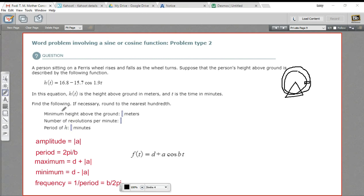In this case, we're being asked to find the minimum height of this person above the ground. So we're being asked to find the minimum value of this function. We're also being asked to find the number of revolutions per minute. A full revolution is the period of this function, and we know how to find the period of a function.